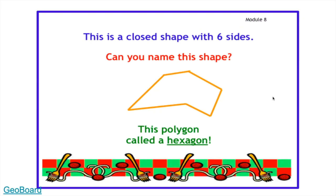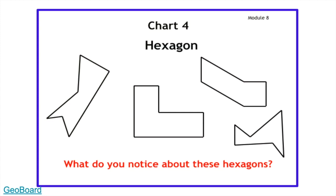Now with your manipulatives, I would like you to make a closed shape with six sides. Can you name this shape? This polygon is called a hexagon. So what do you notice about these hexagons? What are the attributes? Let's count the sides and see. Please pause the video to count how many sides and angles these shapes have. Those are its attributes — that's what makes it a hexagon.